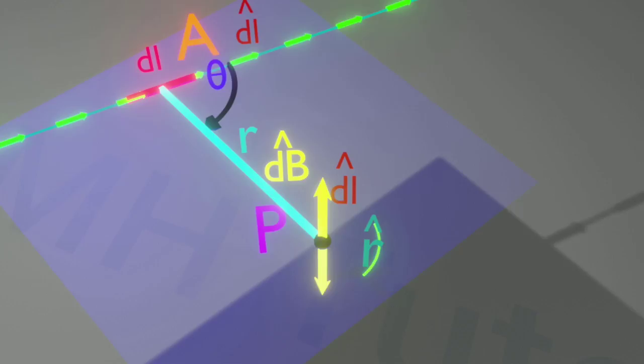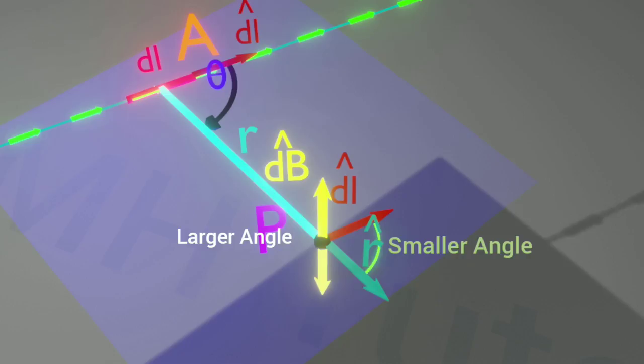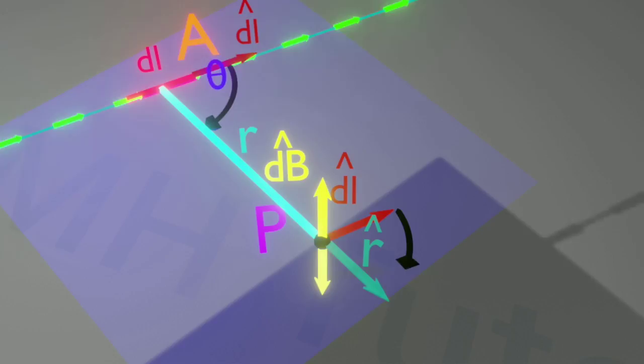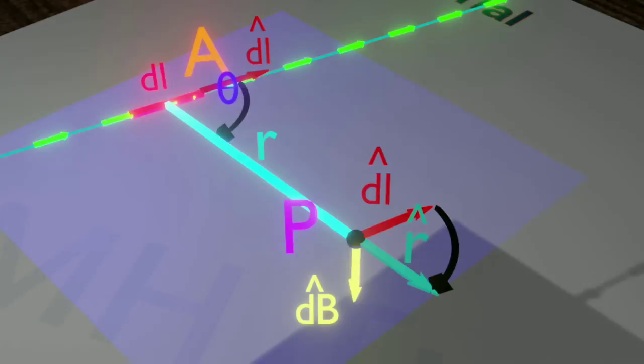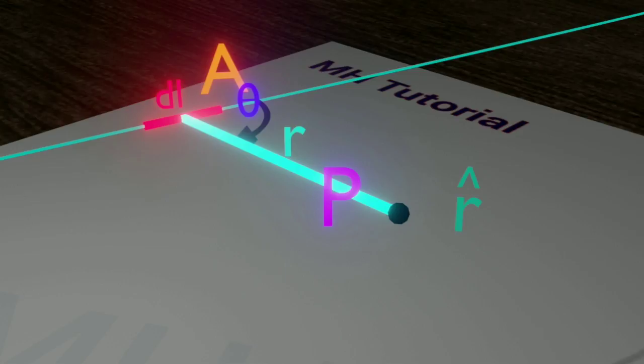Actually, two angles are there between the vectors DL and R. One of them is smaller and a larger another one. We are to move through the smaller angle. Hence, we get a clockwise rotation here. Thus, the direction of this product vector is downward.